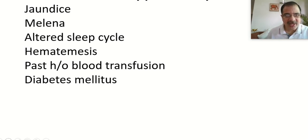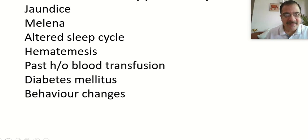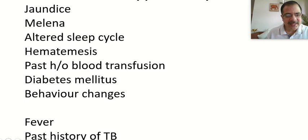We ask about diabetes mellitus, which causes non-alcoholic fatty liver disease due to insulin resistance in type 2 diabetes, leading to CLD and hence ascites. Behavior changes in a young patient give a clue towards Wilson's disease, where CNS changes are important. We also ask about fever and past history of tuberculosis as inflammatory causes. These are the essential history points in any patient with suspected ascites.